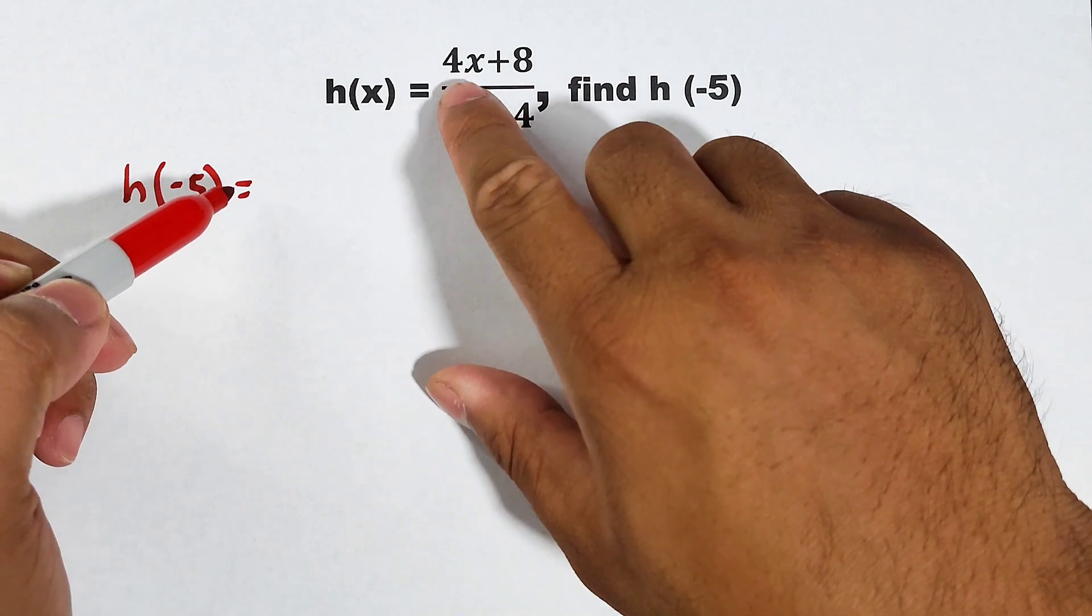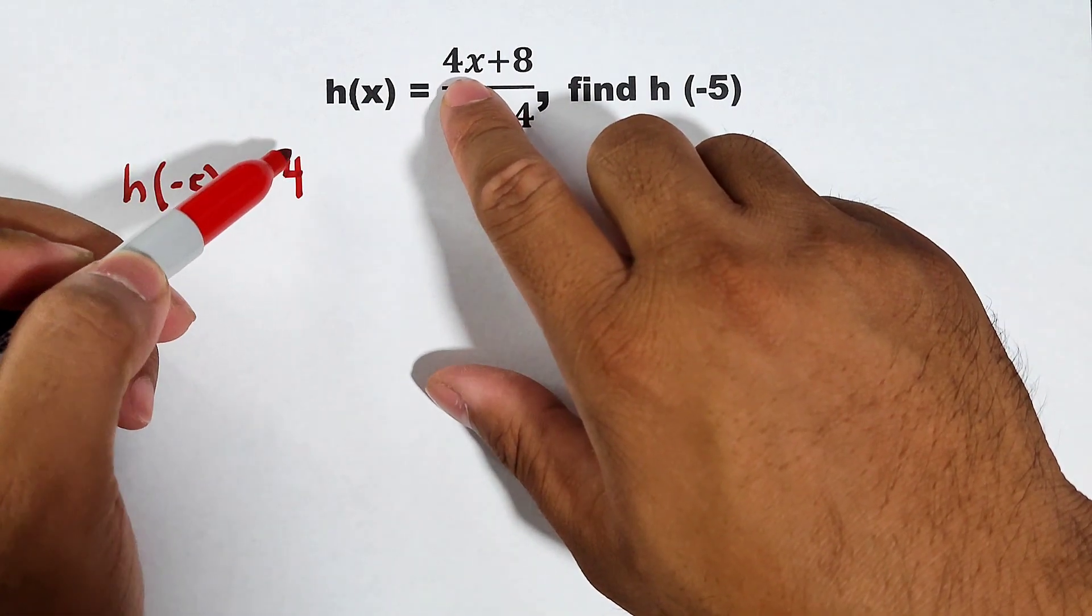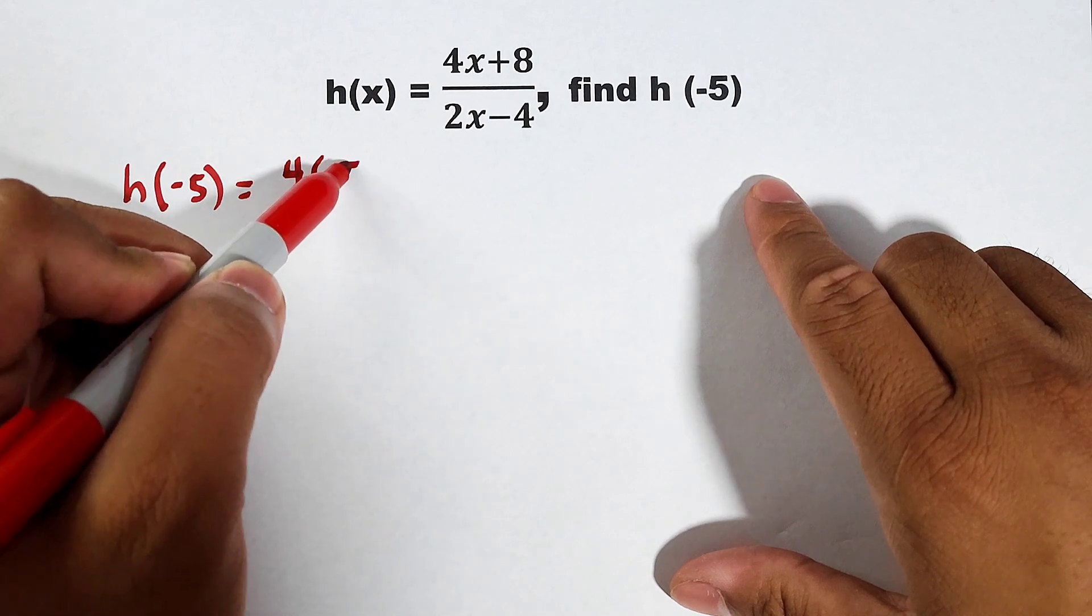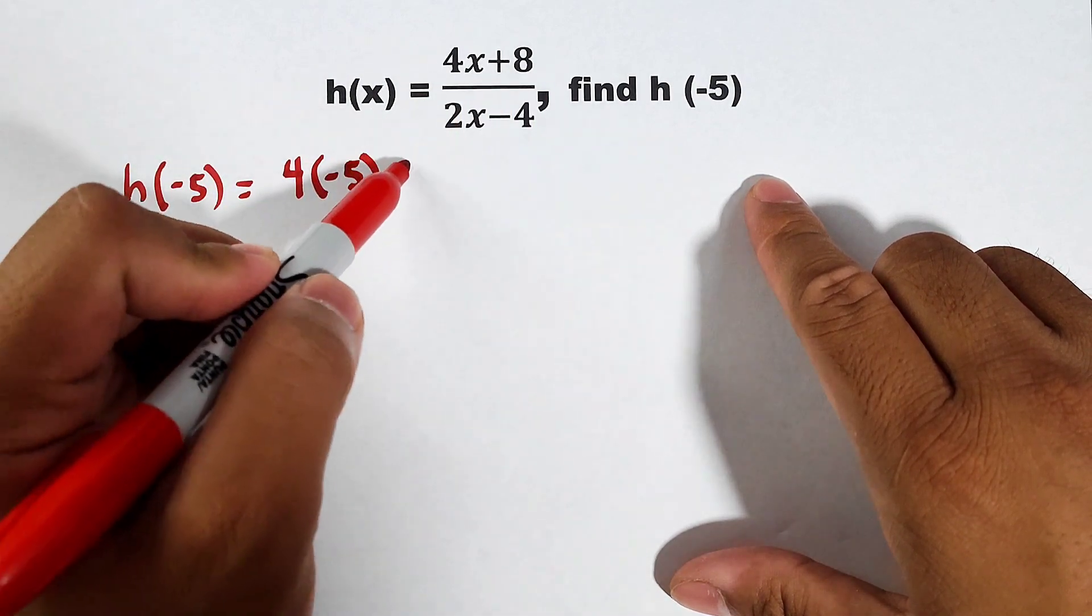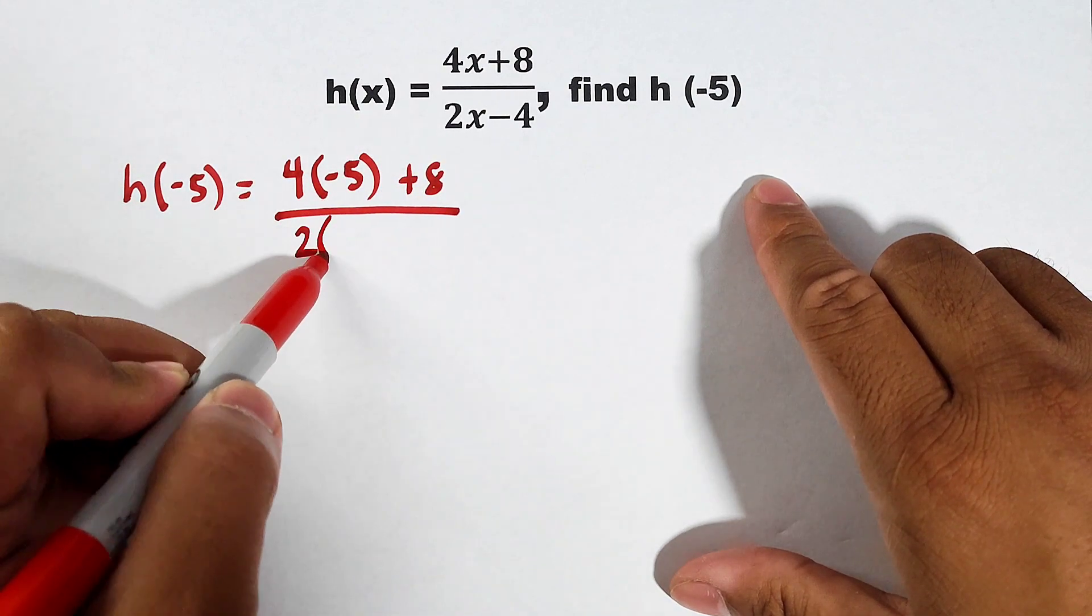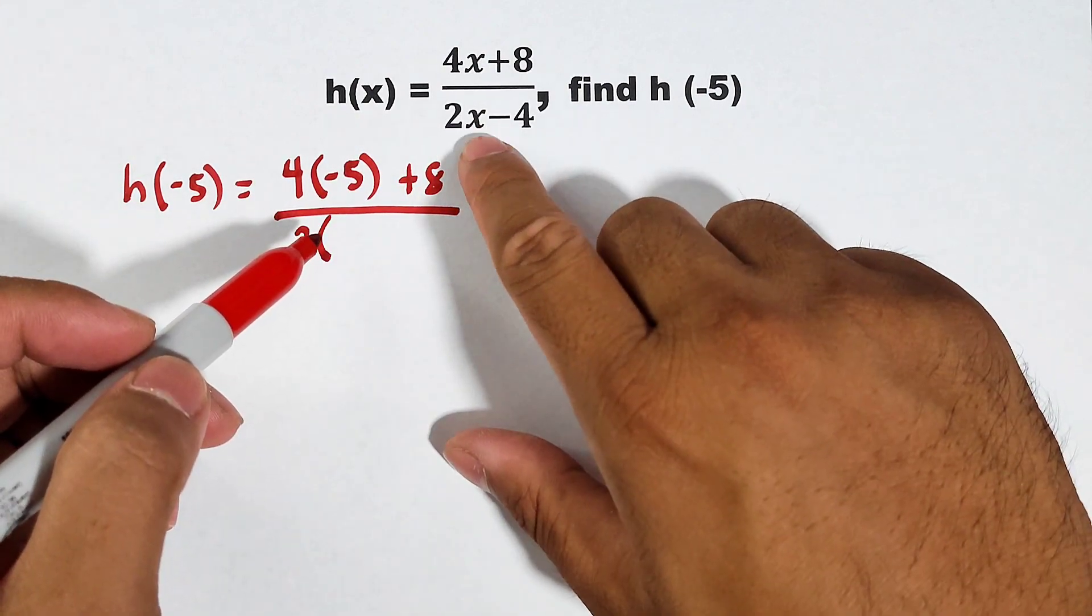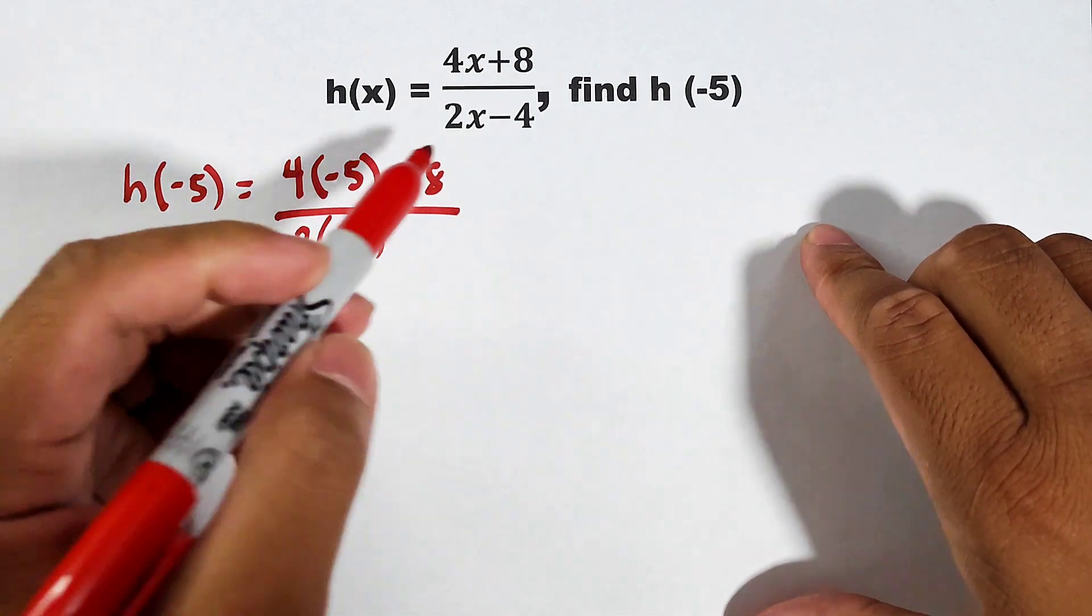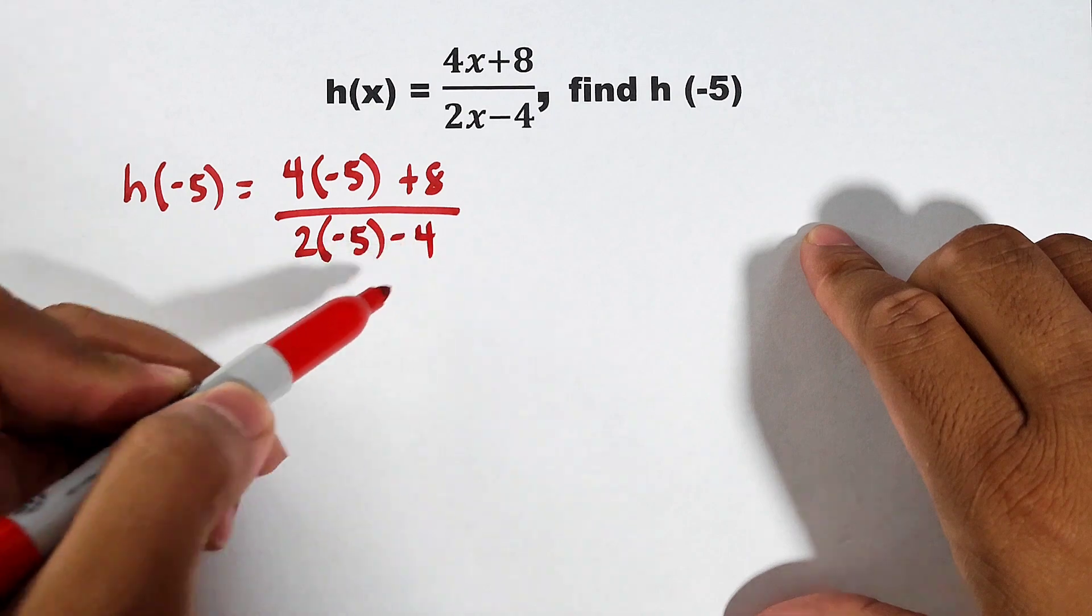Then copy this one, 4. Replace x by negative 5. This is times negative 5 plus 8 over 2 times negative 5. Replace this x by negative 5, negative 5 minus 4.